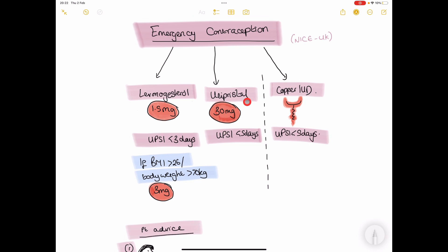The way the oral tablets work is that they prevent or delay ovulation. With the copper IUD, it prevents fertilization or implantation.